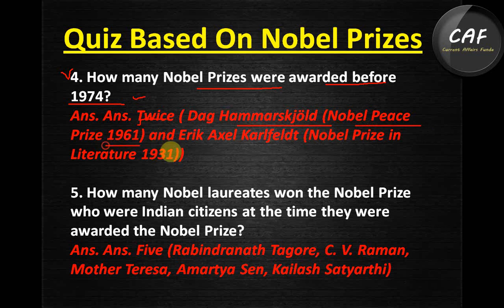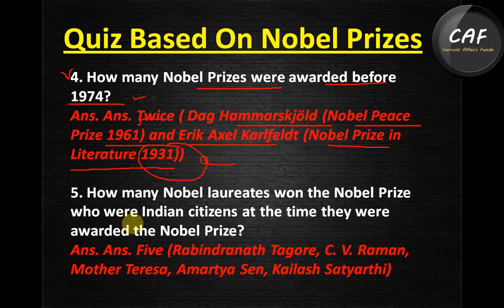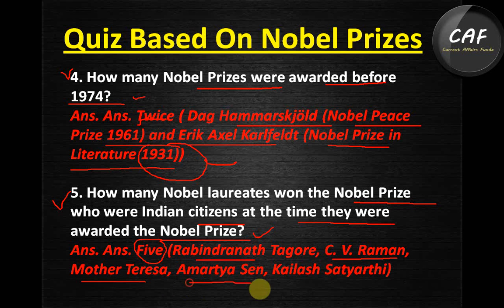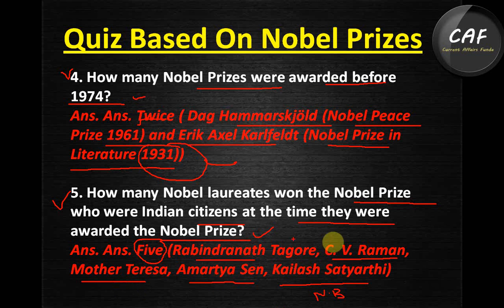Question 5: How many Nobel laureates were Indian citizens at the time they were awarded? The answer is five. They are Rabindranath Tagore, C.V. Raman, Mother Teresa, Amartya Sen, and Kailash Satyarthi. Kailash Satyarthi won the Nobel Peace Prize, and the others won in Literature, Physics, and other humanitarian categories.